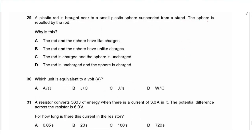Question 29: a plastic rod is brought near a small suspended plastic sphere, and the sphere is repelled. This means the rod and the sphere have like charges — like charges repel. An uncharged object placed near a charged object would attract due to induction. The answer is A.